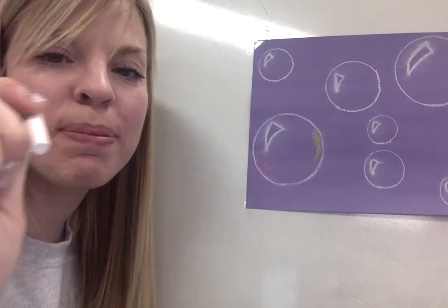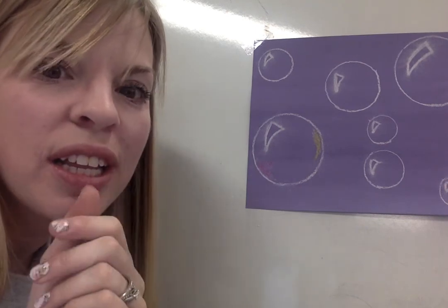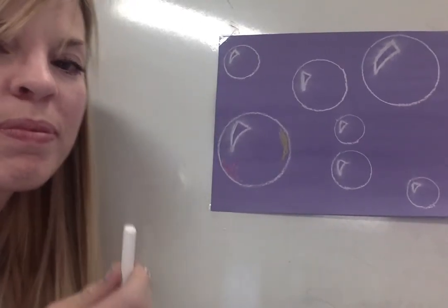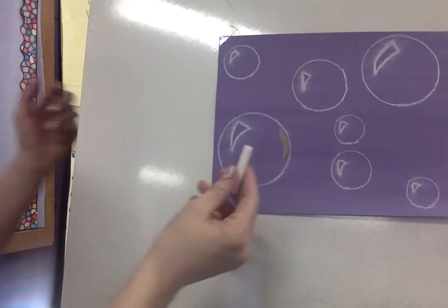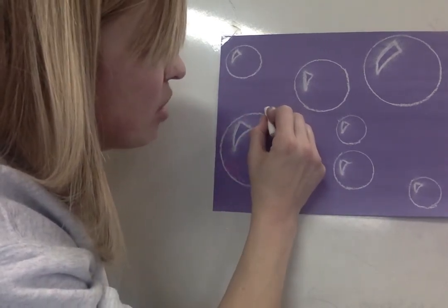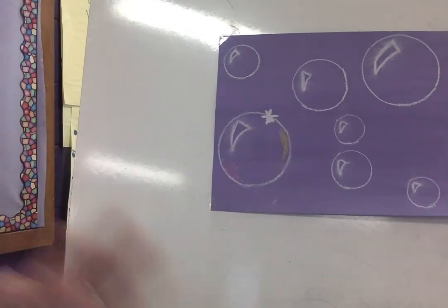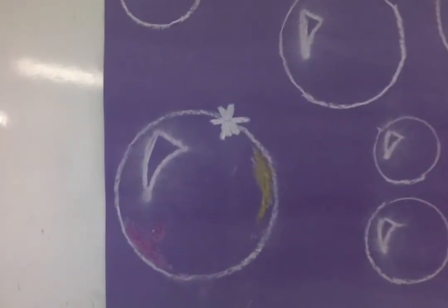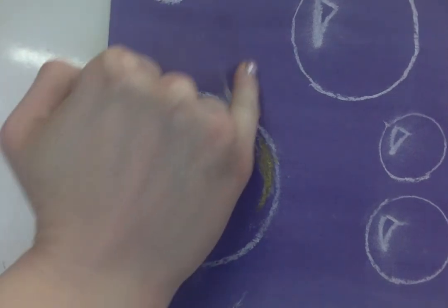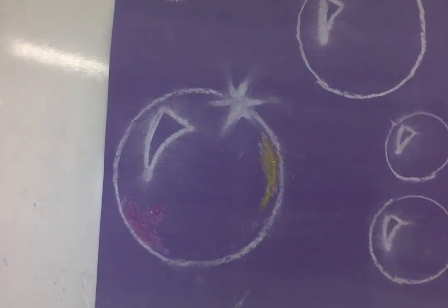We're going to do one more thing to this bubble and then I'm going to let you do all the other bubbles on your own. We're going to make it look like it's sparkling a little bit. Are you ready? So we need to take our chalk one more time. And I'm going to press really hard. It's going to look like a little star. I'll show you in just a second. It's going to look like this. See that? And then I'm going to take my finger again and I'm going to make it go outward. There, look at that.